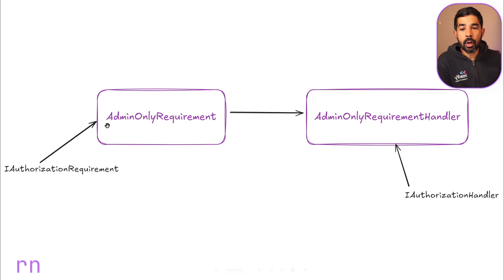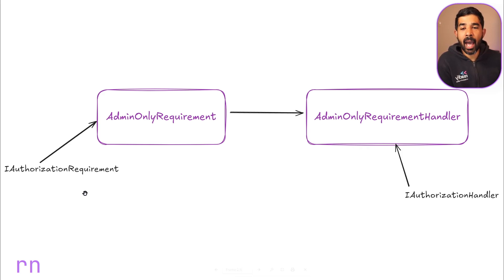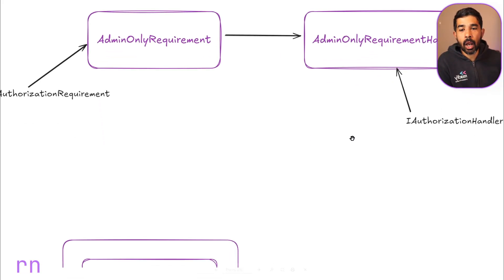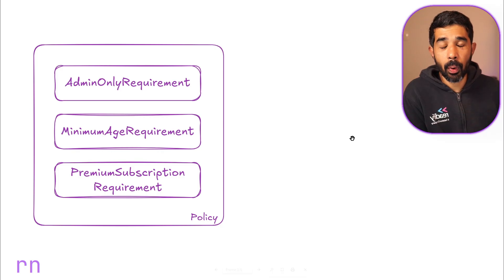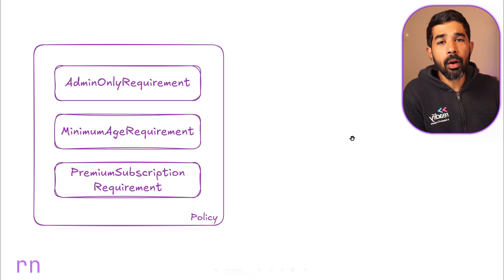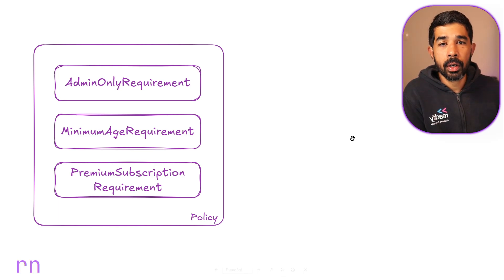Translating this to ASP.NET Core, an admin-only requirement is represented by an IAuthorizationRequirement — a simple marker interface. The handler for this specific requirement implements IAuthorizationHandler, so you can have an AdminOnlyRequirementHandler that implements this interface. A policy is simply a collection of all these requirements — for example, you can combine an admin-only requirement, a minimum age requirement, and a premium subscription requirement using AND or OR conditions.